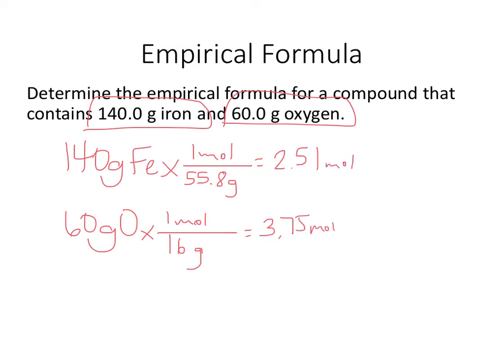Now I want the simplest whole number ratio, so I'm going to divide both of those by the smaller number, and hopefully I'll get whole numbers for both of them. The smaller one's going to be 1, obviously. The larger number, in this case, actually ends up being 1.5, which is a problem because now my formula is Fe1O1.5, and I cannot have a decimal number in my formula.